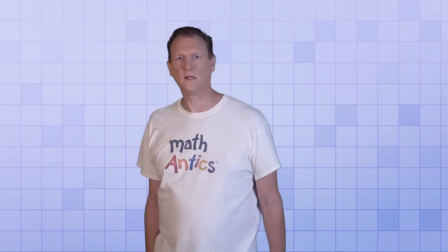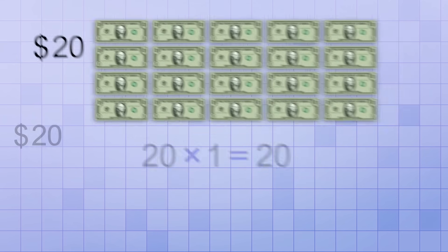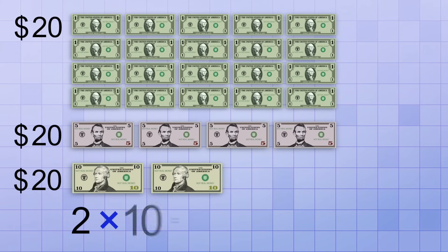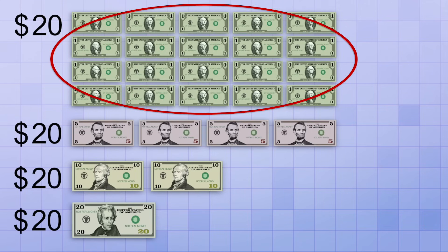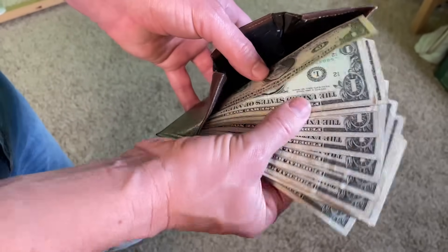Another important thing to realize is that there are usually different ways that you can represent the exact same amount. Take twenty dollars, for example. There are several different combinations of bills you could use to represent twenty dollars. You could combine twenty one dollar bills, since twenty times one equals twenty. Or you could combine four five dollar bills, since four times five equals twenty. Or you could use two ten dollar bills, since two times ten equals twenty. Or you could use just one twenty dollar bill. Using twenty one dollar bills is the least efficient way to make twenty dollars, while using just one twenty dollar bill is the most efficient way, because it uses the fewest number of bills.